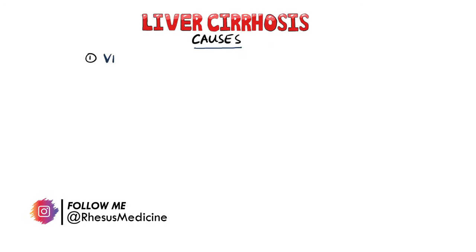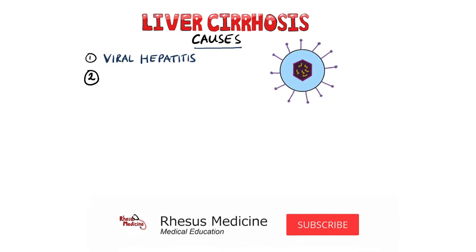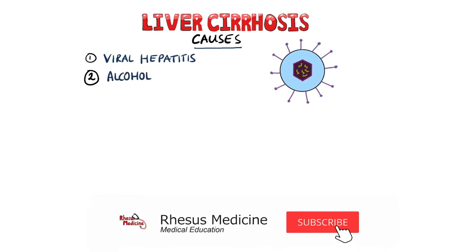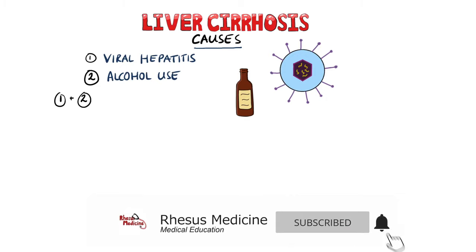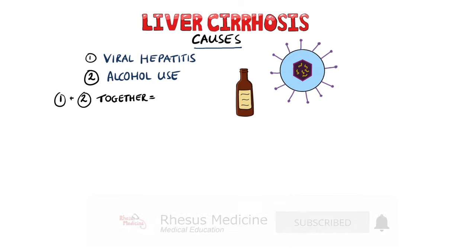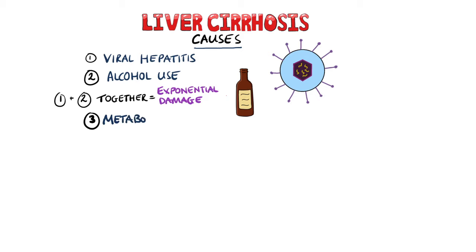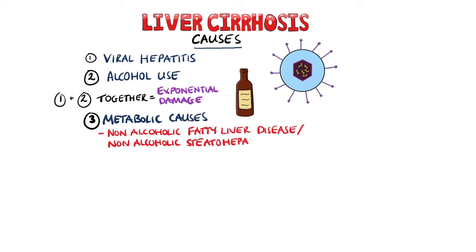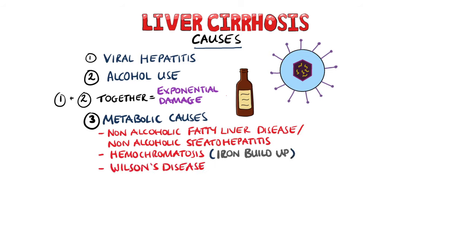The causes include chronic viral hepatitis and alcohol use, and the damage is exponentially increased in people who have viral hepatitis at the same time. There are metabolic causes such as non-alcoholic fatty liver disease and non-alcoholic steatohepatitis, haemochromatosis, Wilson's disease, and alpha-1 antitrypsin deficiency.